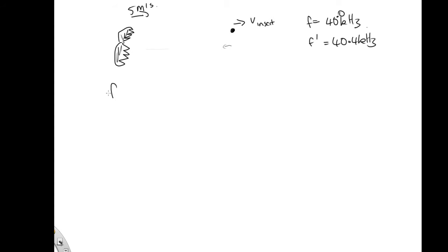OK, so the frequency of the reflected pulse. In this case, our bat is acting as our source, and our insect is acting as our observer.